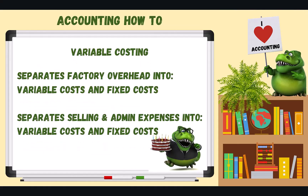With variable costing, we separate factory overhead into variable and fixed portions. We also separate selling and administrative expenses into variable and fixed. For example, a counter person selling cakes may need more hours the more cakes we sell — that's a variable selling expense. But a supervisor who gets paid the same regardless of how many cakes we sell — that's a fixed cost. So we separate those two things out.